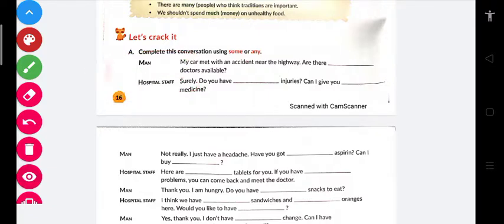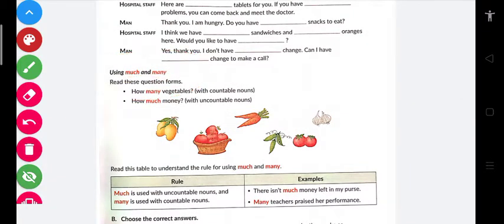Now moving further, using much and many. Read these question forms. The first question is 'How many vegetables?' with countable nouns. 'How much money?' with uncountable nouns. Let's try to understand. There are vegetables and fruits both. Can you identify their names? Can you identify where is carrot, where are peas, where are tomatoes and ginger, where are apples, where are mangoes?